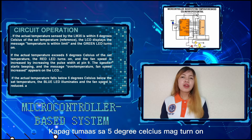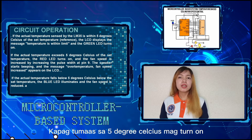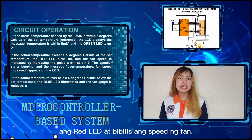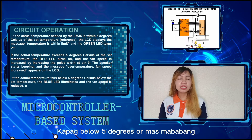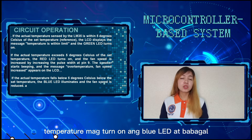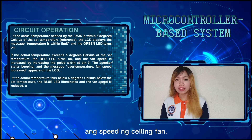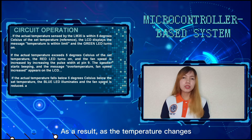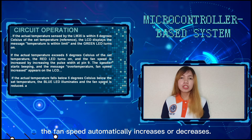When the temperature exceeds 25 degrees Celsius, the red LED turns on and the fan speed increases. When the temperature is below 25 degrees or at a lower temperature, the blue LED turns on and the ceiling fan speed decreases. As a result, as the temperature changes, the fan speed automatically increases or decreases.